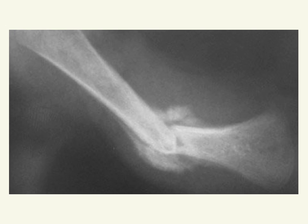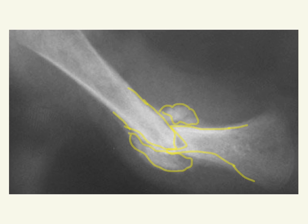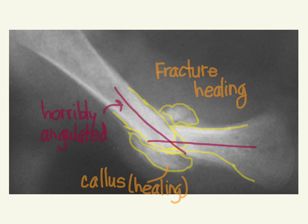What's noticeable about this fracture is the horrible angulation — this bone was never properly set by an orthopedist or emergency physician. There's also callus formation here, meaning the bone has already started to heal. An obvious fracture occurred and nobody sought care for it, which is itself indicative of abuse. This is fracture healing on a horribly angulated bone.